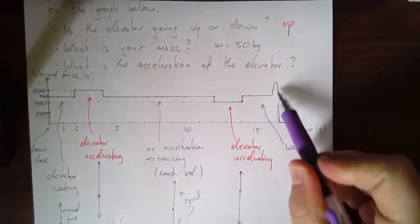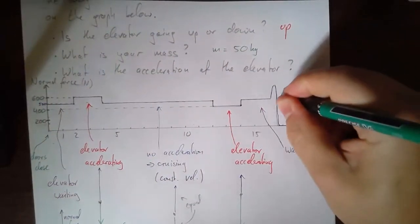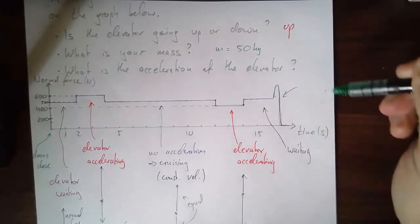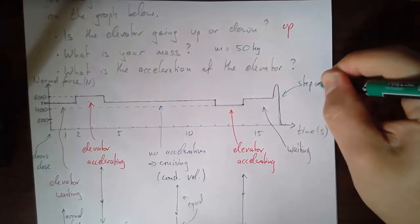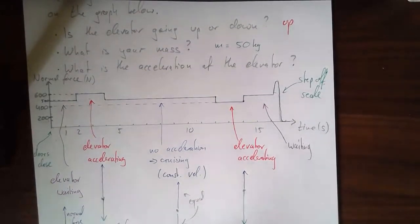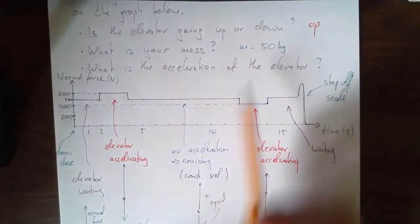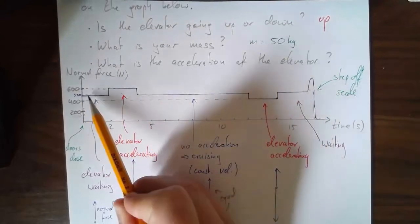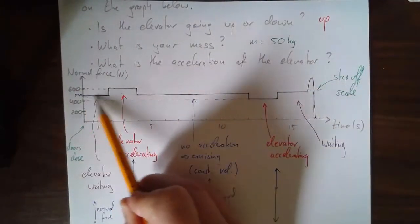The doors open, and then there's this weird bump at the end - that's just us stepping off the scale. Stepping off the scale means we need to push our foot down so we can move our body upwards - that's where the bump comes from. Then we're off the scale so the scale goes to zero.